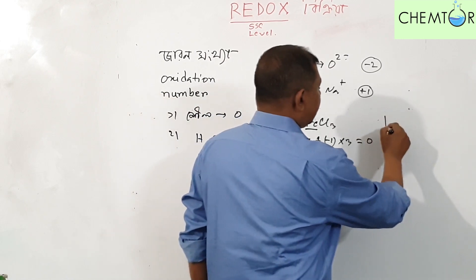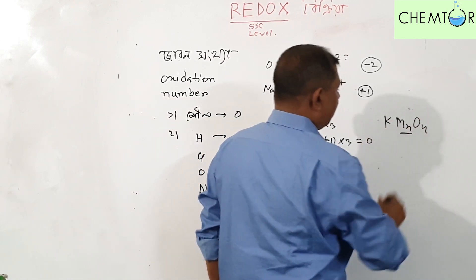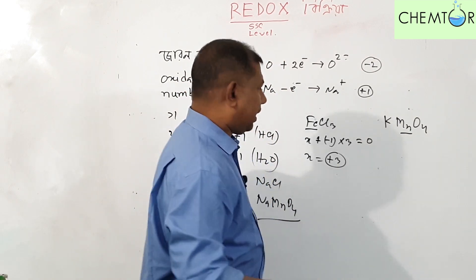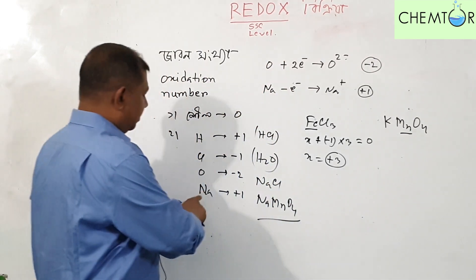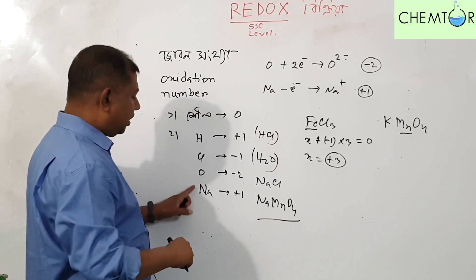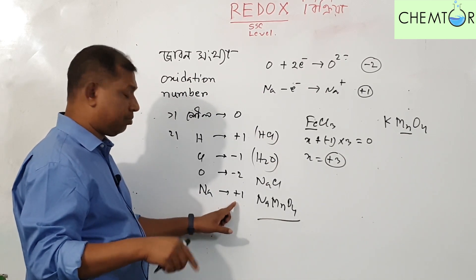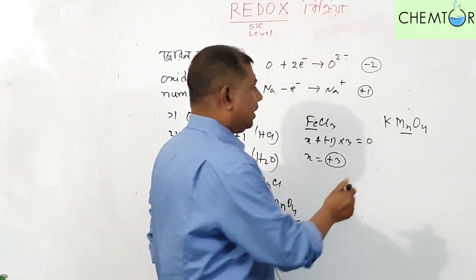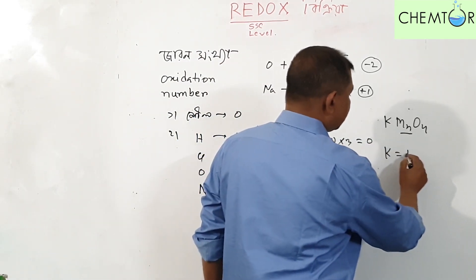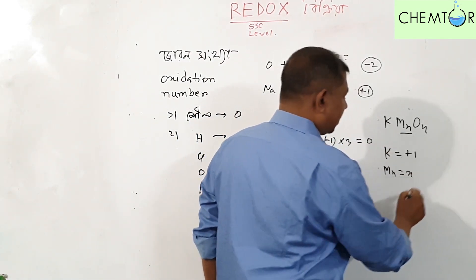We have KMnO4. Potassium is plus 1, manganese we need to find, and oxygen is minus 2. The potassium is plus 1, and the manganese oxidation state needs to be determined.